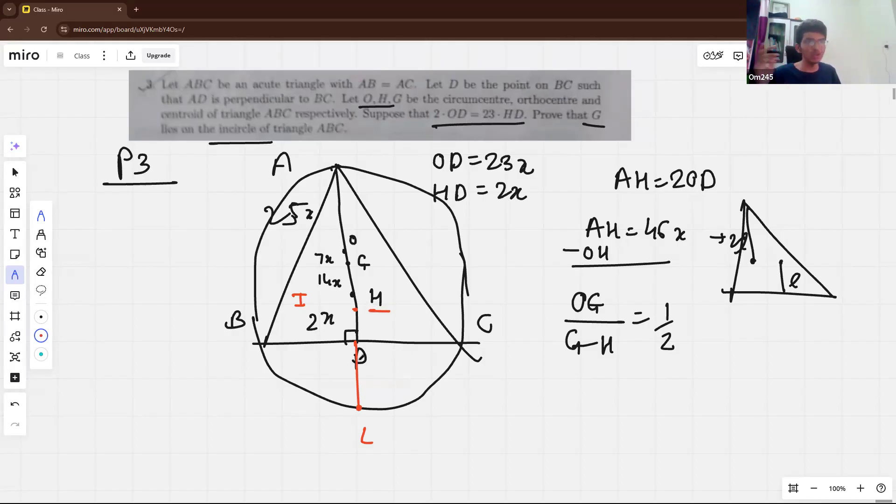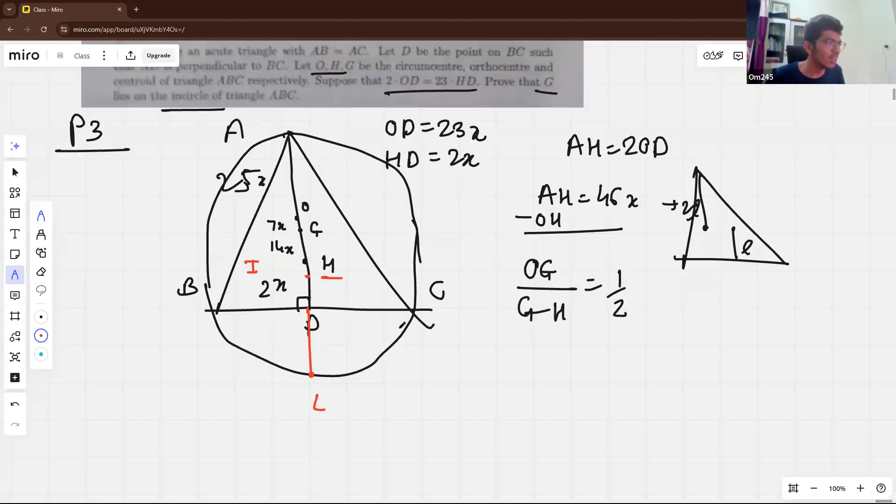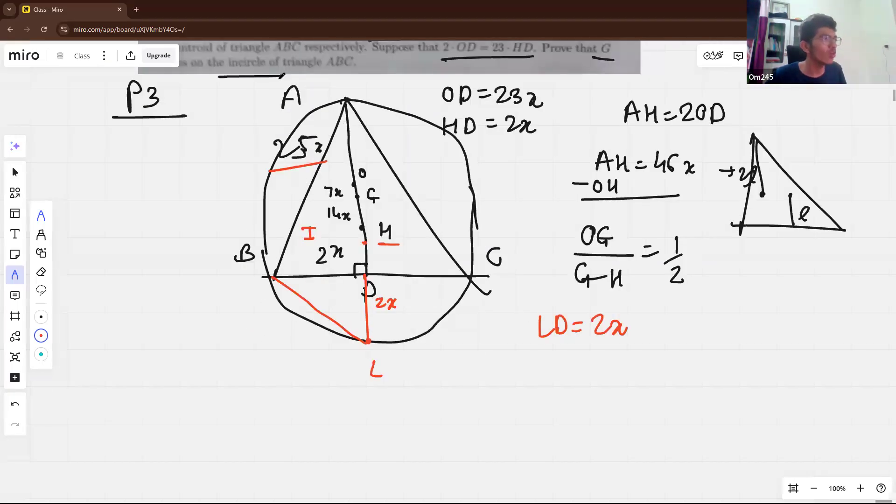So first is, because H is orthocenter, reflection of H will lie on the circumcircle of ABC. So that's give us directly AI equal to 2X. Or other ways, because AO is equal to 25X, we get AI also 25X and you subtract this 23X and we get this is 2X normally. Now, because AI is here, we get this is like, it is the antipode of A. So therefore angle ABI will be 90.